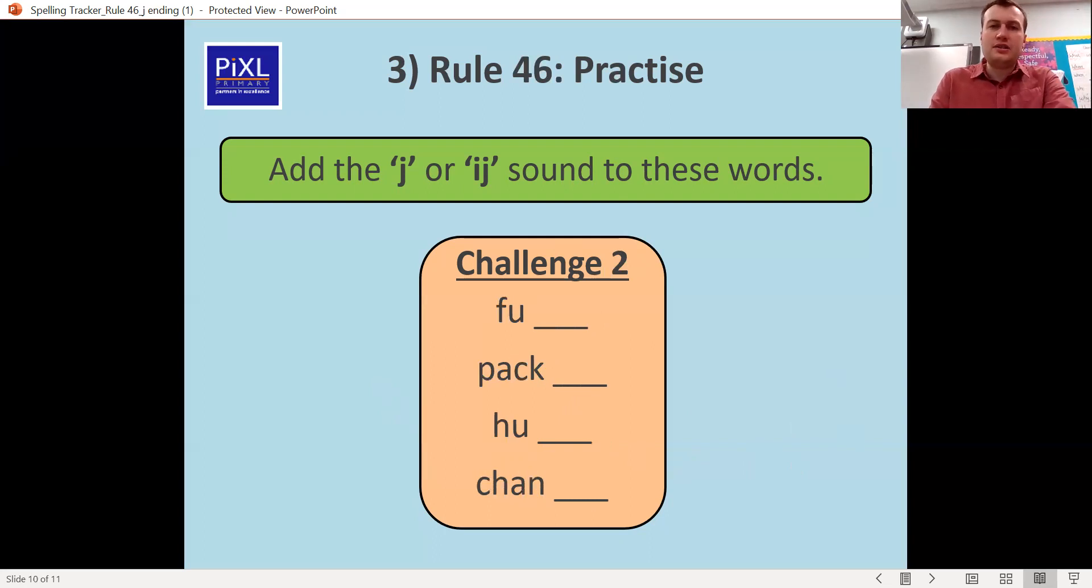Okay, right, next one. Fudge, package, huge and change. So fudge is that A sound so it's a lonely vowel and it's not saying its name so you do need the D. You need the D for fudge. For package, pack-edge, it's that edge sound so A-G-E. For huge you're saying that U so it's just a G and an E, and then for change you've got a consonant because N is not a vowel so it's just a G and an E at the end of that one.